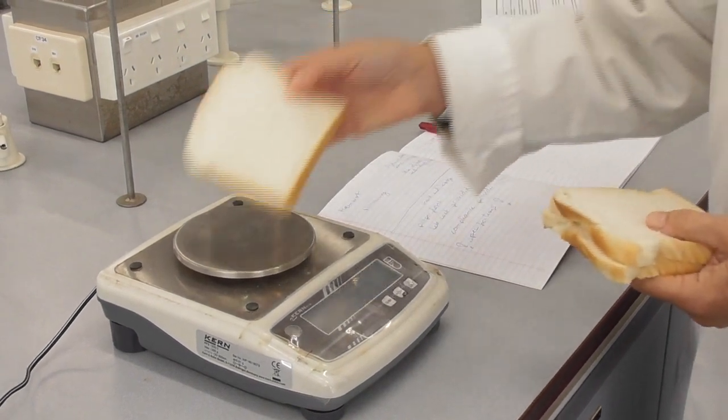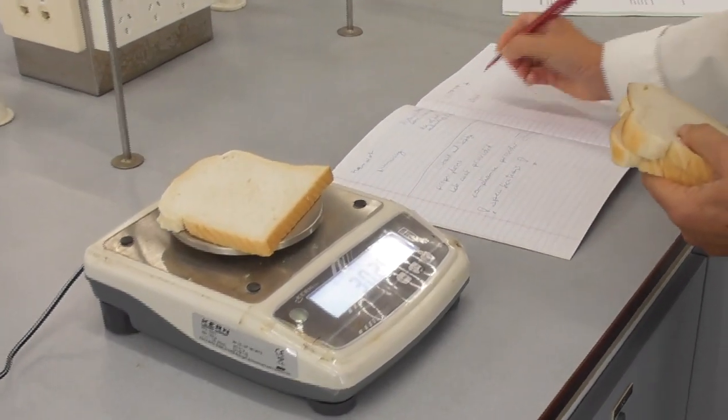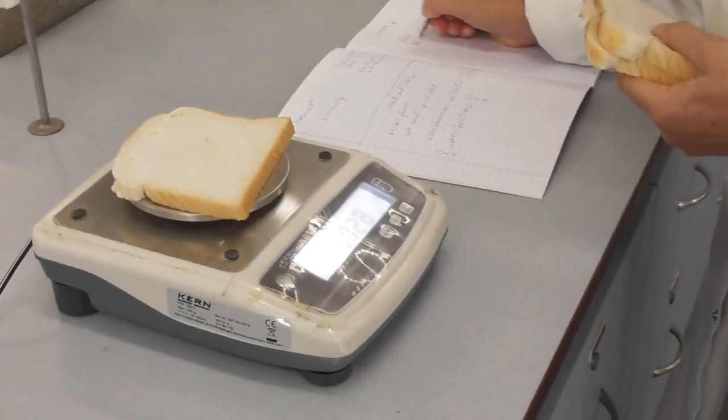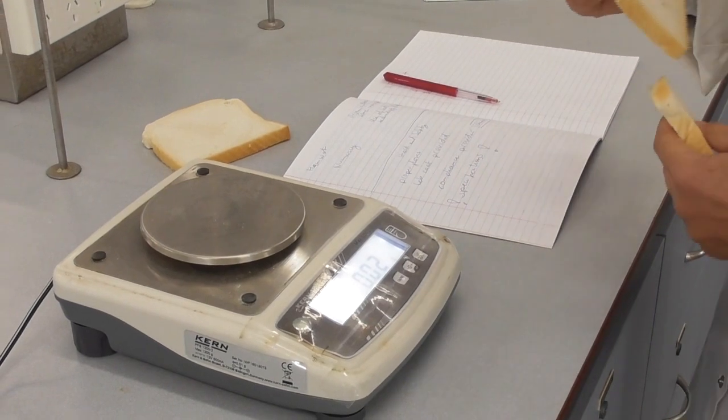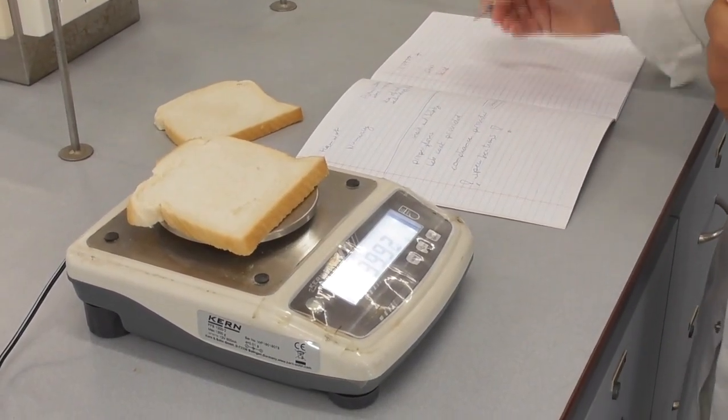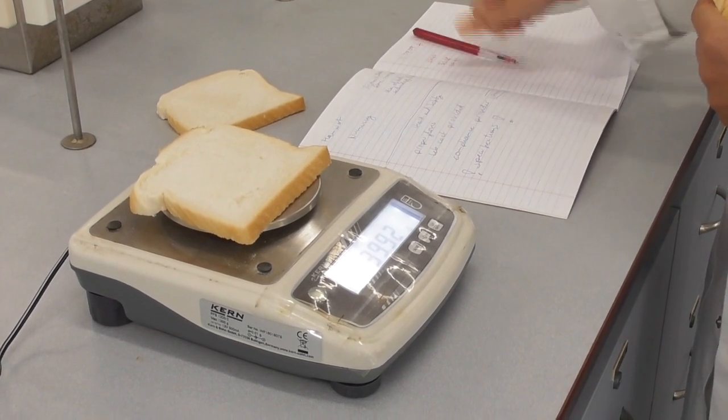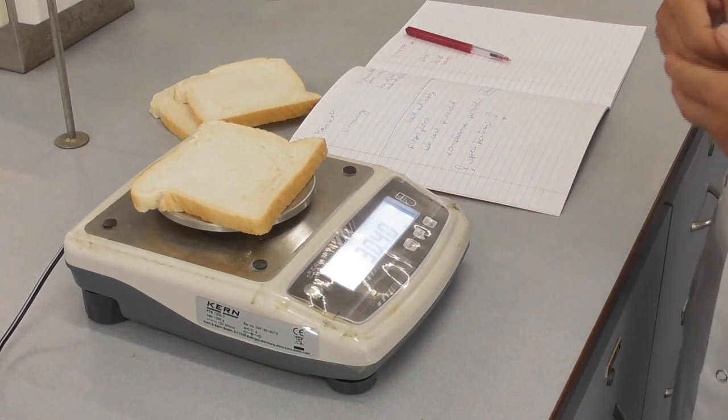In this experiment we are trying to determine the calcium content in bread. I start out with weighing three slices of the white bread I am using on a balance and noting down their weights. I will use these three weights to determine the average mass of a slice.